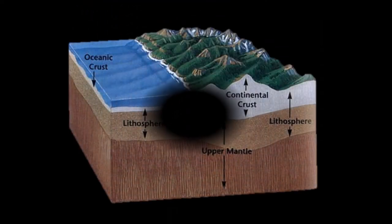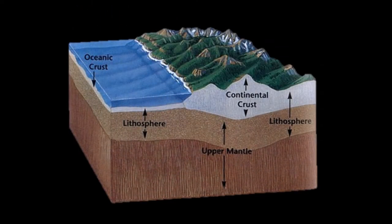The crust is the outer part of the lithosphere, which is further divided into sial and sima.